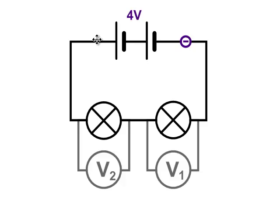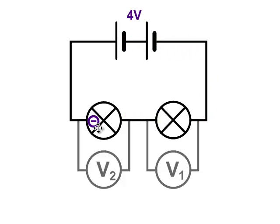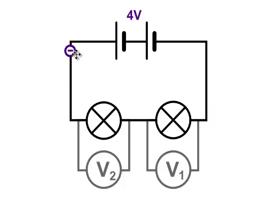To think about the potential difference in a series circuit, we just need to remember what the current does in that circuit. The current is made up of electrons, and the electrons flow around the circuit. You can imagine them gaining energy when they go through the cells and then giving up that energy to the components in the circuit. So in this case, electrical energy in the cells is going to be transferred to light and heat at the bulbs.